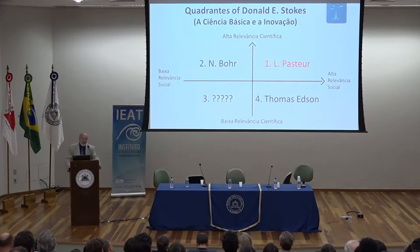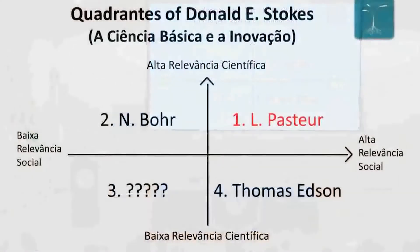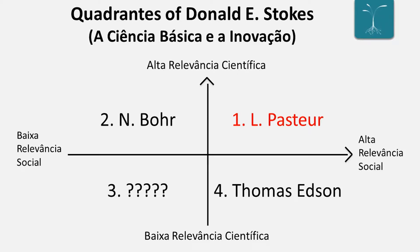This concept appeared in a book called Ciência Básica e Inovação by Donald Stokes, in the 1990s, which contextualizes very well where innovation comes from. He made these four quadrants: on the vertical Y axis, you have the scientific relevance of the product developed in the university, and on the horizontal axis, the social relevance of these same products. Certainly, each quadrant has its important value.